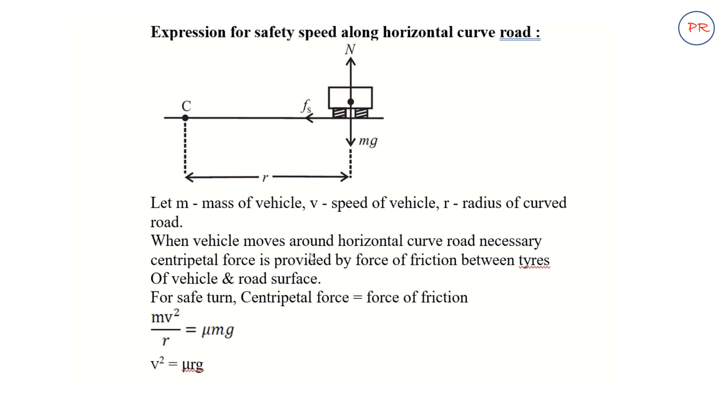When the vehicle moves around a horizontal curved road, the necessary centripetal force is provided by the force of friction. For a safe turn, the centripetal force must be equal to the force of friction.